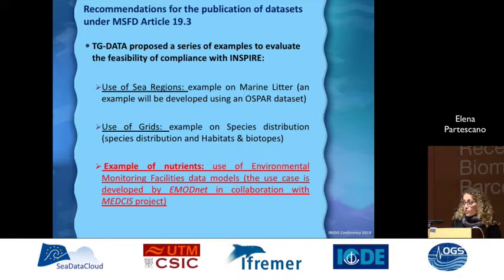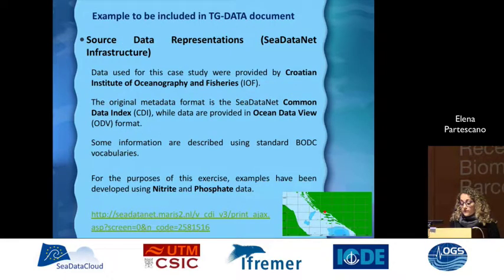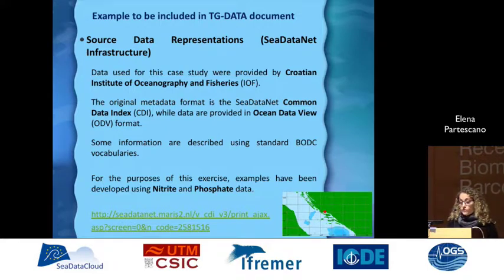The nutrients data example used environmental monitoring facility data models, using data collected in the EMODnet project. This use case was developed in collaboration with the MATCHES project. We used the environmental monitoring facility, oceanographic geographical features, and observation and measurement as the INSPIRE data themes to map nutrients data in the Mediterranean Sea, using data provided by the Croatian Institute of Oceanography and Fisheries. The original metadata are in CDI format, while the data are in ODV format, with some information described using BODC vocabularies. For this example, we used the nitrite and phosphate parameters.